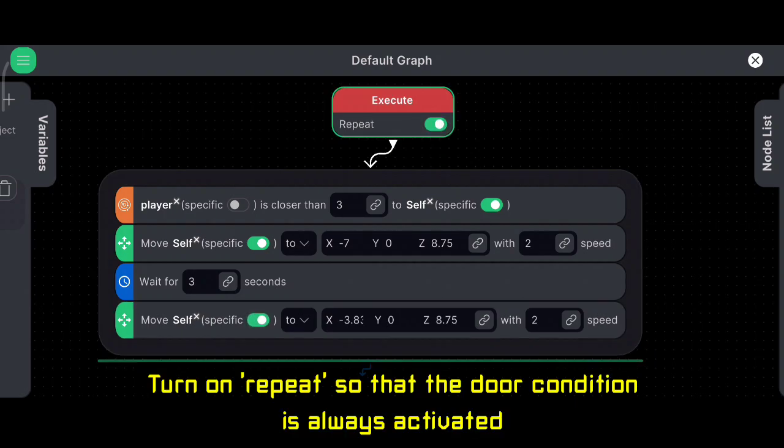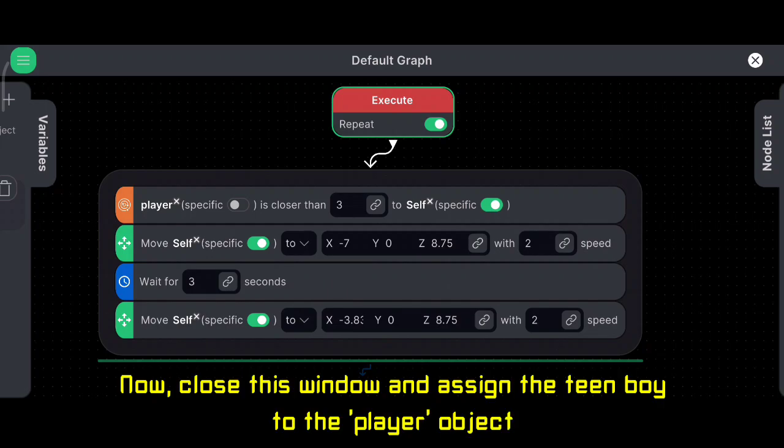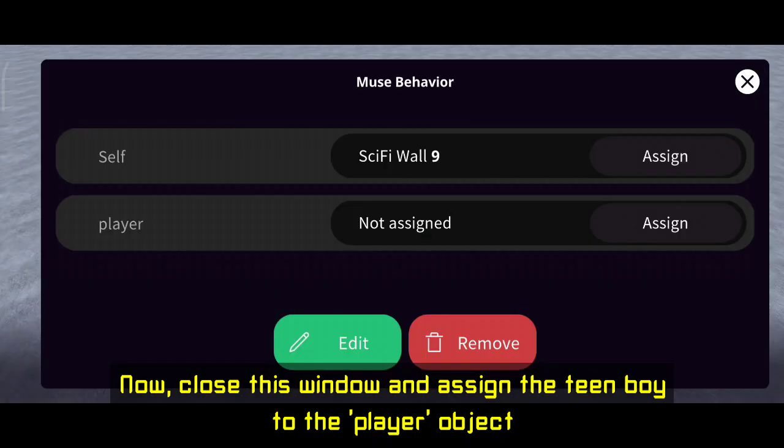Turn on repeat so that the door condition is always activated. Now close this window and assign the team boy to the player object.